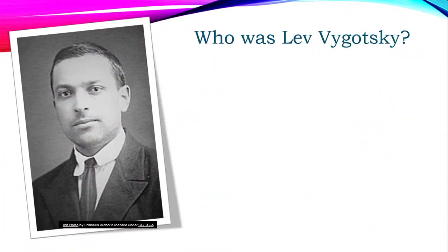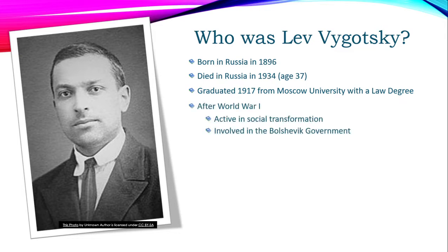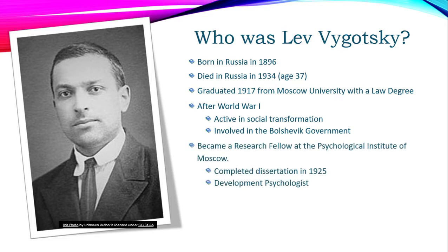Lev Vygotsky was Russian-born in 1896 and he passed away in 1934 at the age of 37 from tuberculosis. He graduated from Moscow University with a law degree — most of us know the experience of starting off in one profession and moving into another, which is what he did throughout his short life. After World War I, he was very active in social transformation and also within the Bolshevik government. He was asked to become a research fellow with the Psychological Institute of Moscow, where he completed his dissertation in 1925 and became the developmental psychologist that we know.